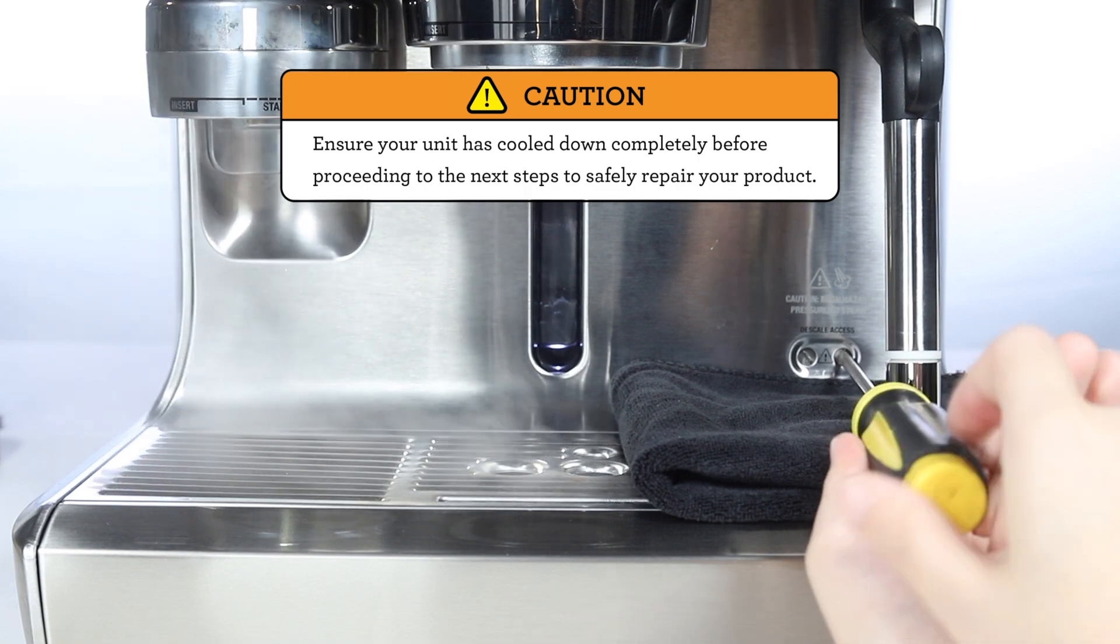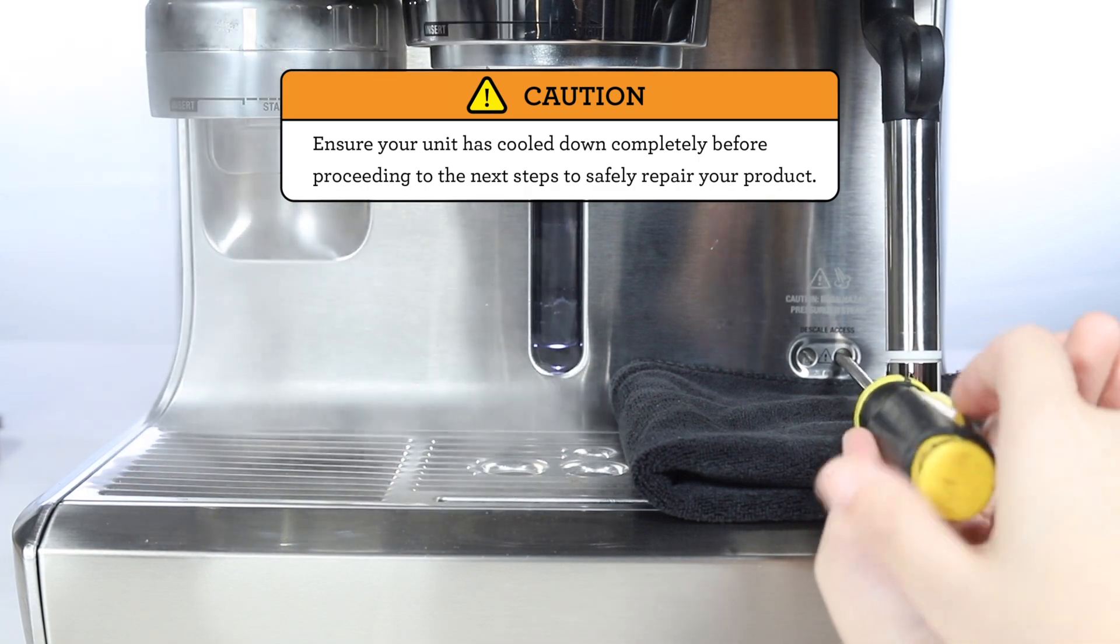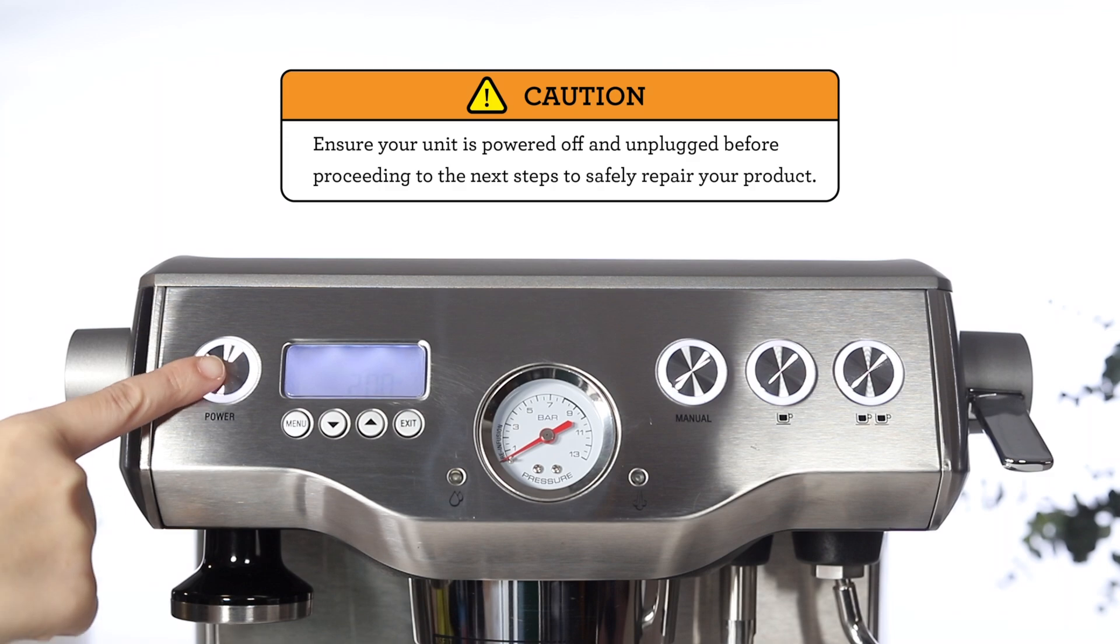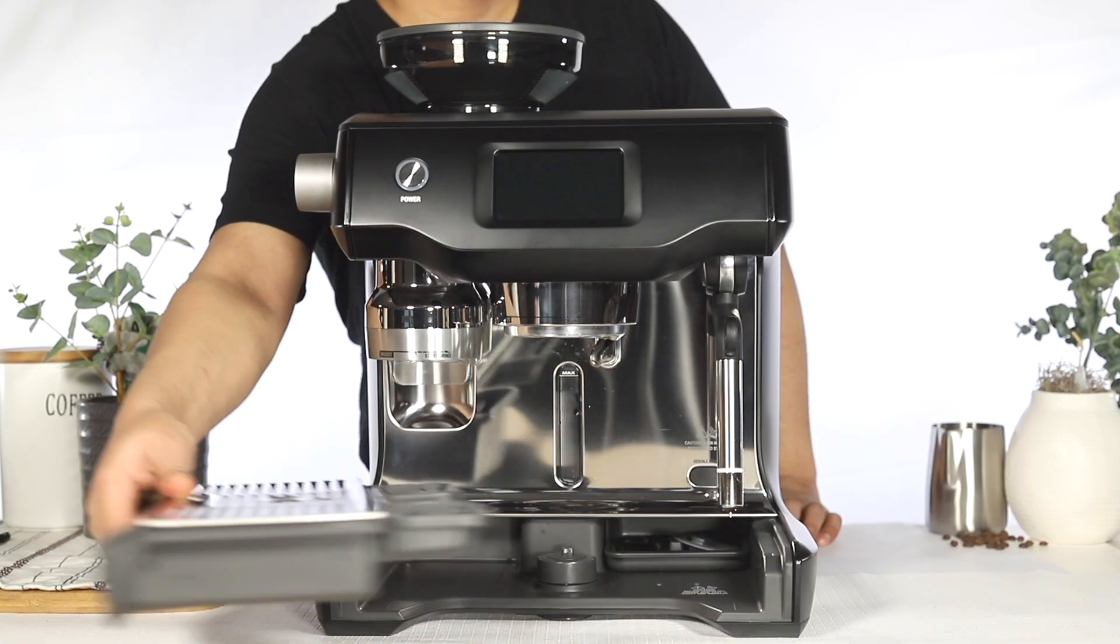Before you begin, make sure your boilers are drained and your unit has cooled down before powering off and unplugging the machine. Remove the drip tray and water tank.